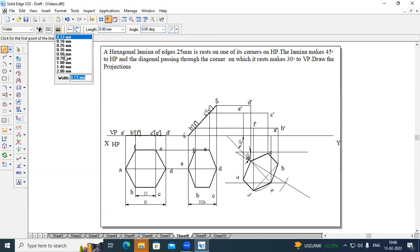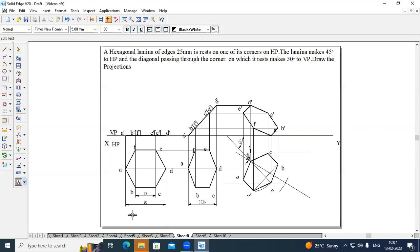Now join the line using a thick line from A' to B', B' to C', C' to D', D' to E', D' to F', and F' to A'. So this is stage 1, this is stage 2, this will be stage 3 drawing. This is top view.